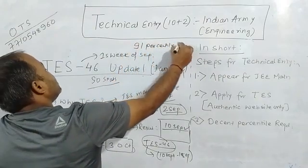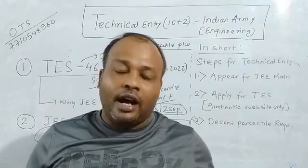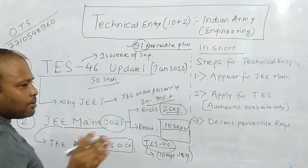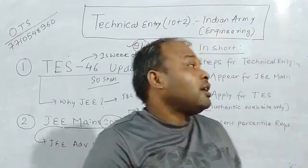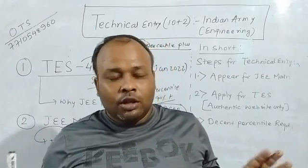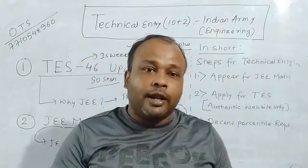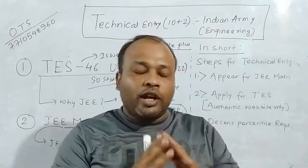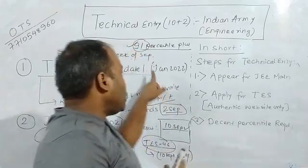To get a TES SSB call on the basis of JEE Mains percentile, you have to ensure a minimum of 91 percentile. I rate TES above Naval Academy because TES has more seats and more people apply. If you are below 90 percentile you are in the danger zone. The last time Naval Academy cutoff was approximately 93 percentile — around 80,000 rank. So you need 91 percentile plus; 70 percentile in JEE Mains means you have almost no chance.